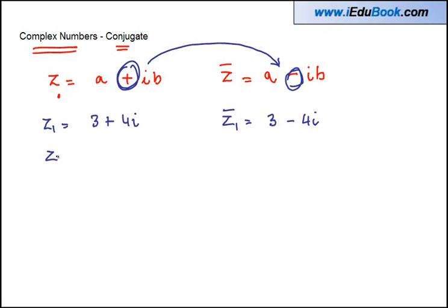Let us say you have Z2 equals 7 minus 3i. Then the conjugate of Z2 is given by 7 minus minus 3i, or 7 plus 3i. So basically there is a change of sign.